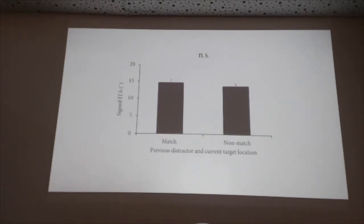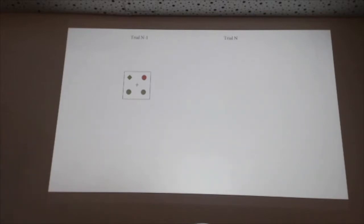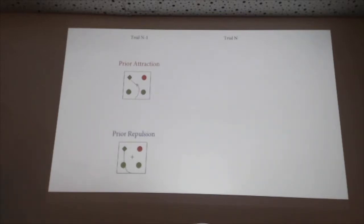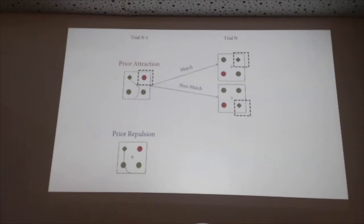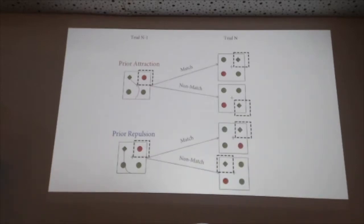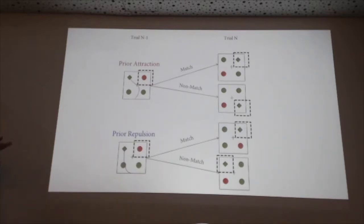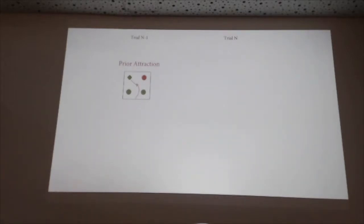But there's a lot of variation from trial to trial in how much the distractor disrupts hand movement. So we separated trial N-1 into two categories: prior attraction trials, where the hand moved toward the distractor, and prior repulsion trials, where the hand moved away from the distractor. We categorized trial N-1 based on whether the hand moved toward or away from the distractor, and then looked at whether the distractor location on that trial matched or didn't match the target location on the current trial N.